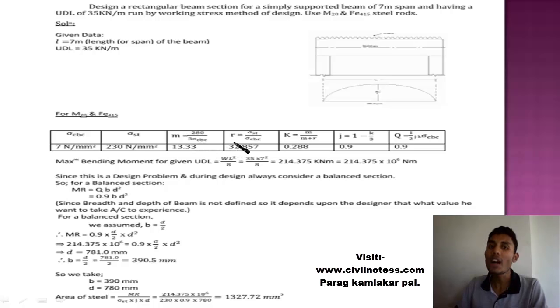After that we determine R which is given by sigma SD upon sigma CBC. Then K is M upon M plus R, then J equals 1 minus K by 3, and Q equals 1 by 2 into J K into sigma CBC.